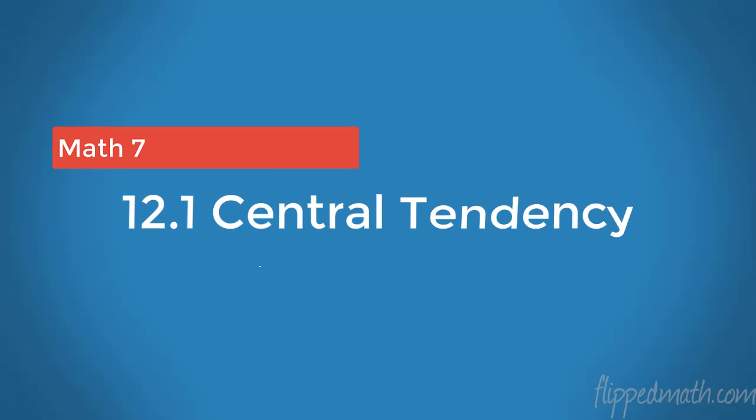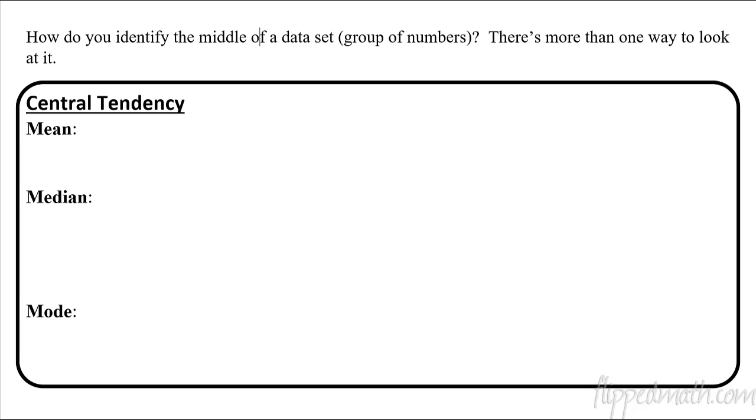Hello, Math 7 boys and girls. This is Mr. Bean. Welcome back to another lesson in Math 7. Today we're going to talk about this thing called Central Tendency. Central Tendency is just a way that we group numbers together and figure out how they form around the middle, or how they group towards the middle. And so we call this a data set.